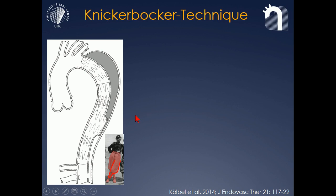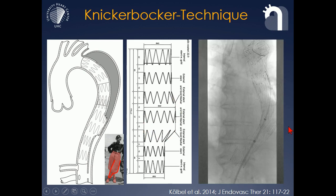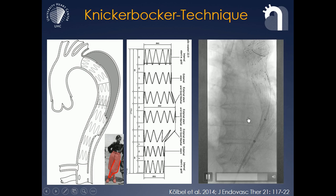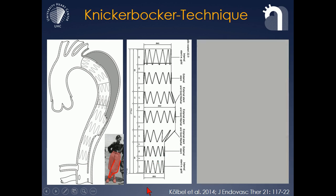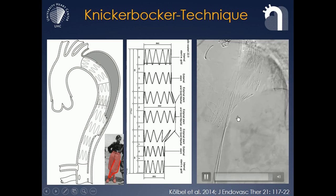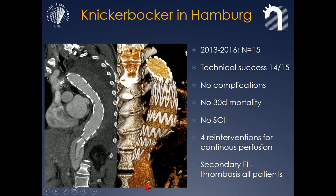Another technique to seal off the false lumen is a little bit similar to what Eric Rosselli just showed us, with balloon dilating stent grafts in the true lumen. We have designed a special stent graft that has a mid-bulge section that allows for the maneuver of rupturing the dissection membrane with a large compliant balloon, so that the stent graft gets this Knickerbocker shape, directing flow to the true lumen while the large section obstructs the false lumen and prevents false lumen backflow. This technique has been successful in most cases; one technical failure was malrotation of the device.